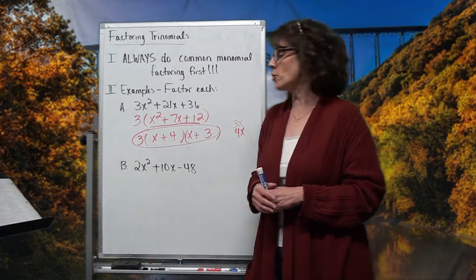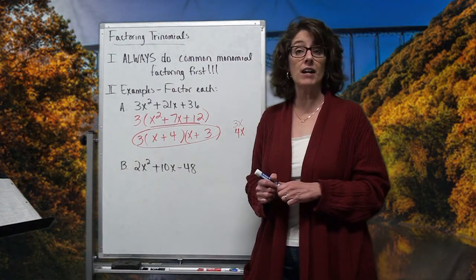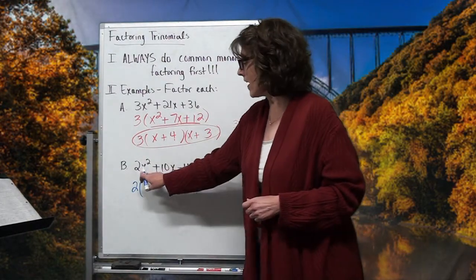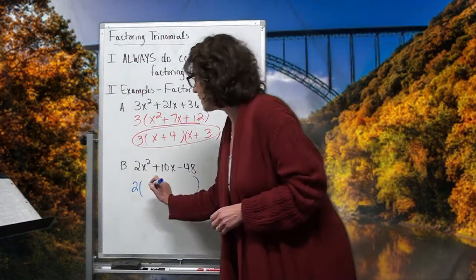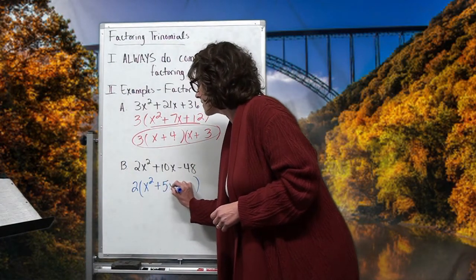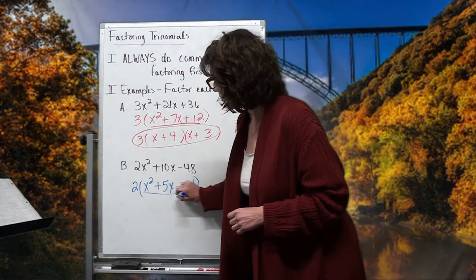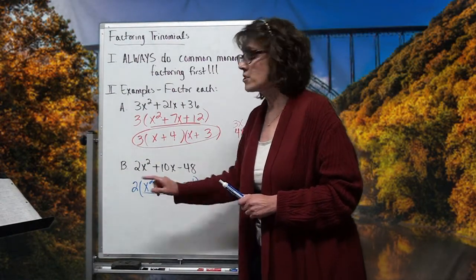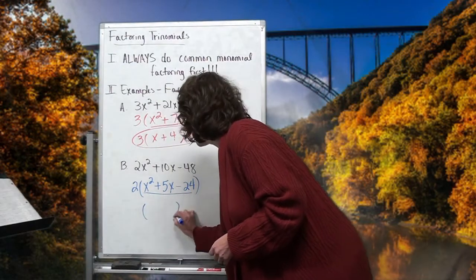Looking at the next example with 2x squared, 10x, and 48: with coefficients 2, 10, and 48, I can divide 2 out of each one. I can divide x's out of the first two terms but not the last, so 2 is the best I can divide out. Dividing by 2 leaves x squared, then 5x, then minus 24. Looking inside that parenthesis — I can't take x's out of every term and there's nothing more to divide from the coefficients. So I'm headed for the double parenthesis.